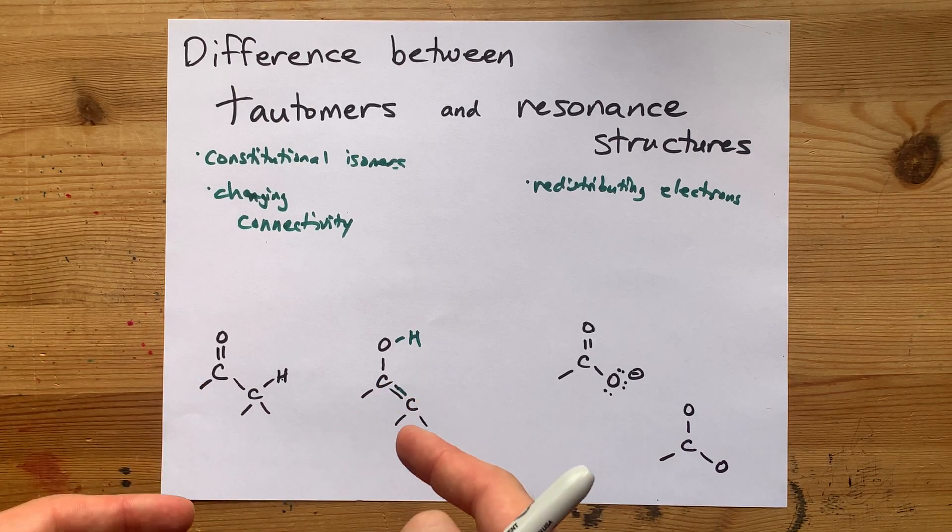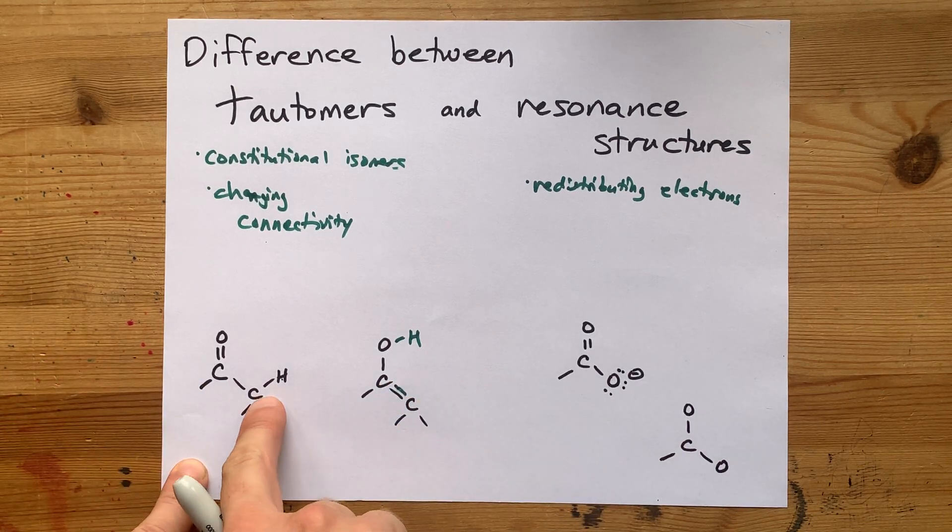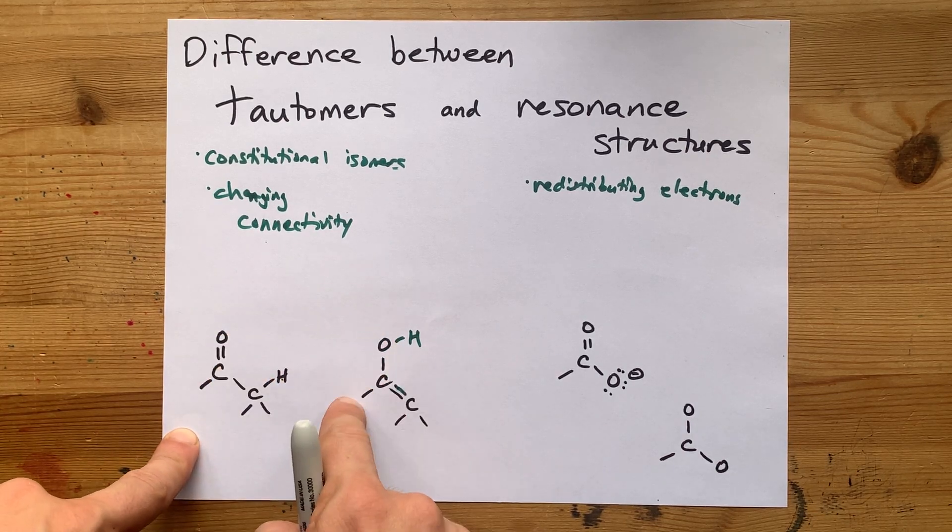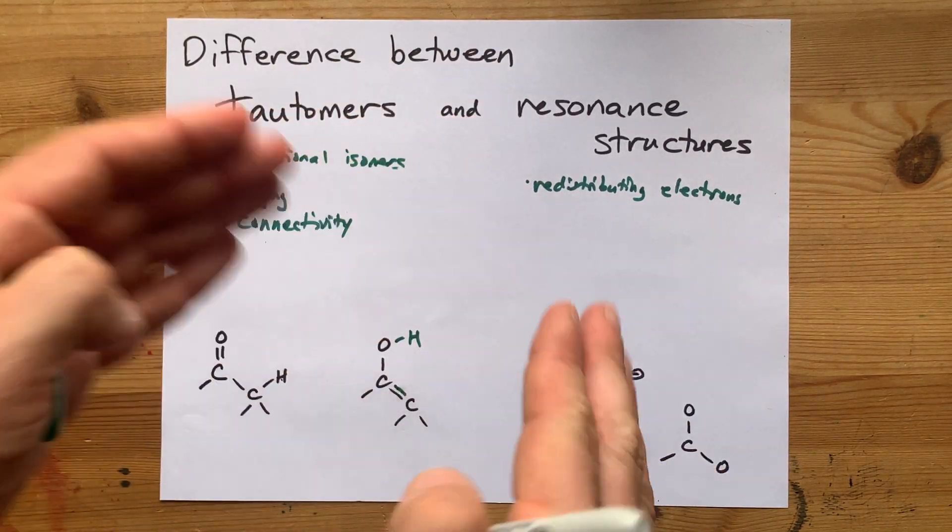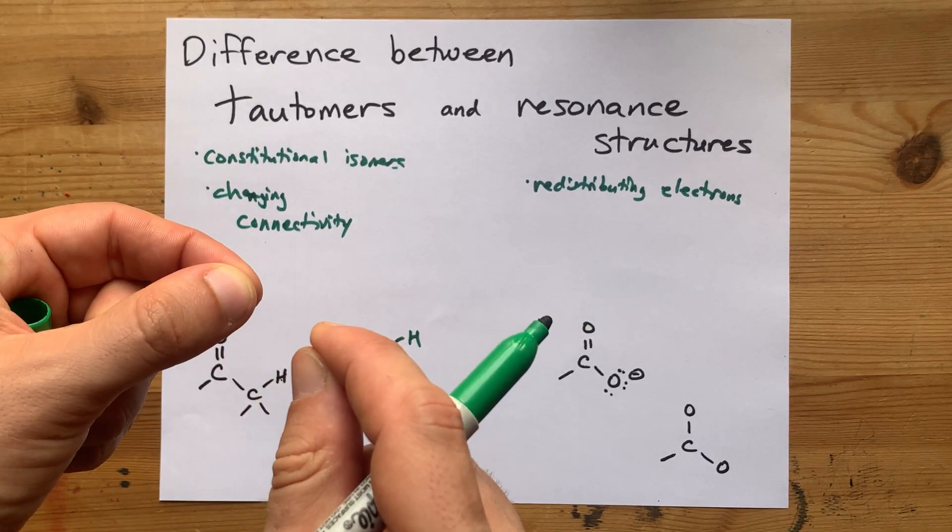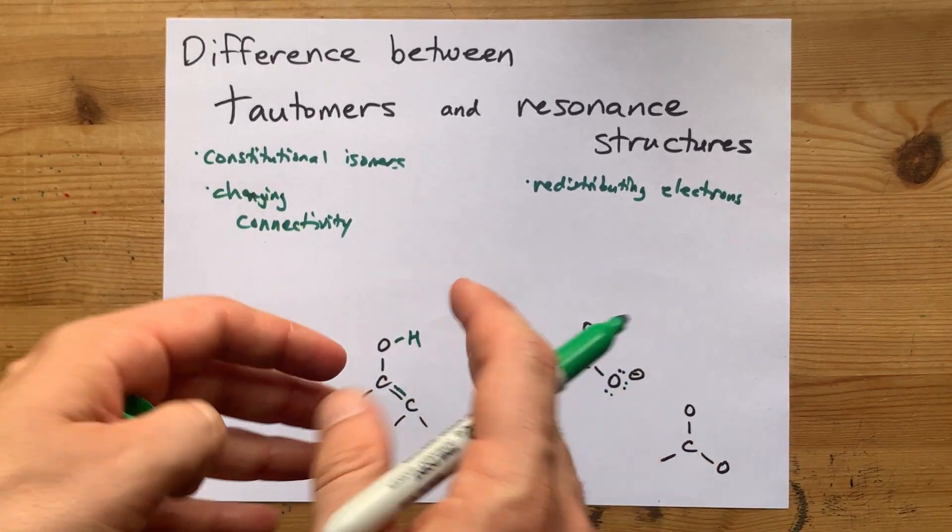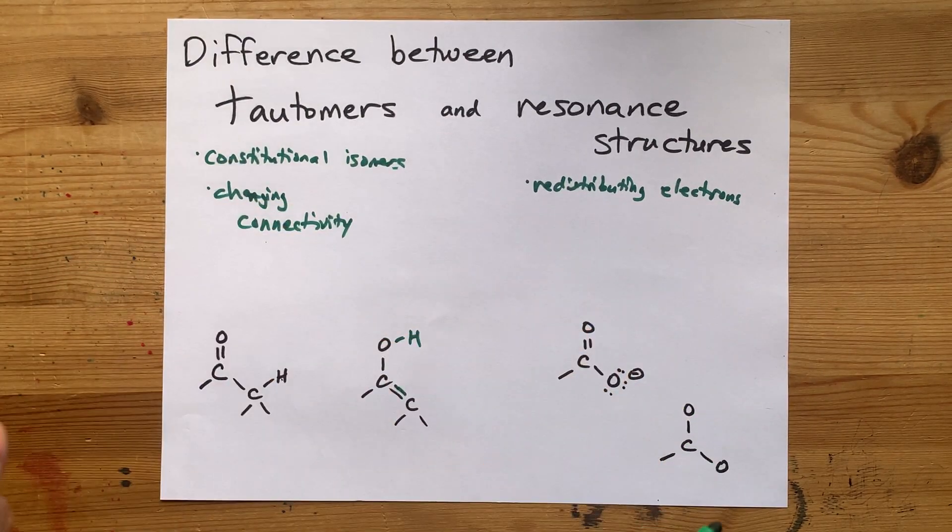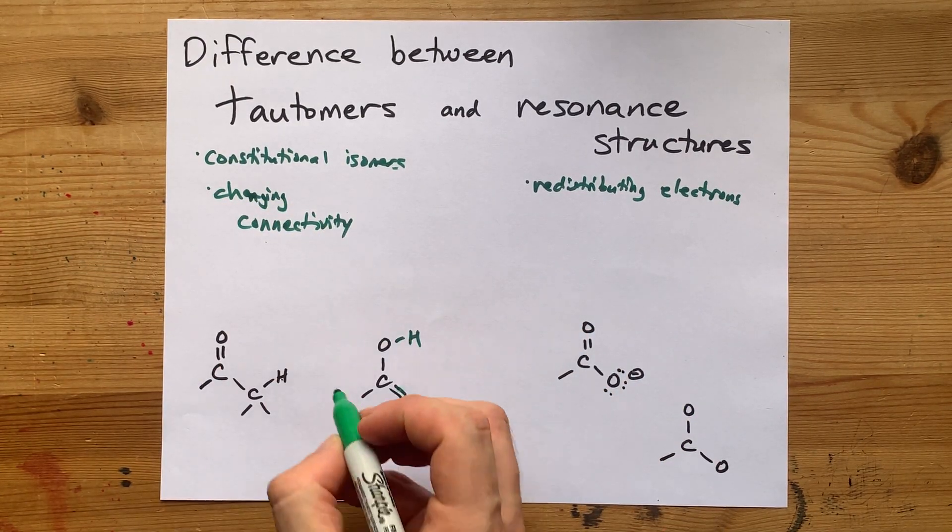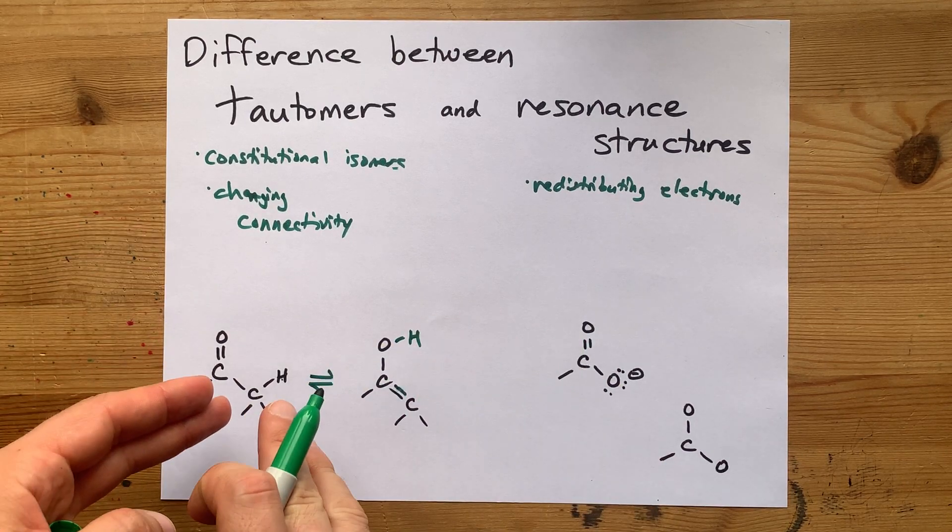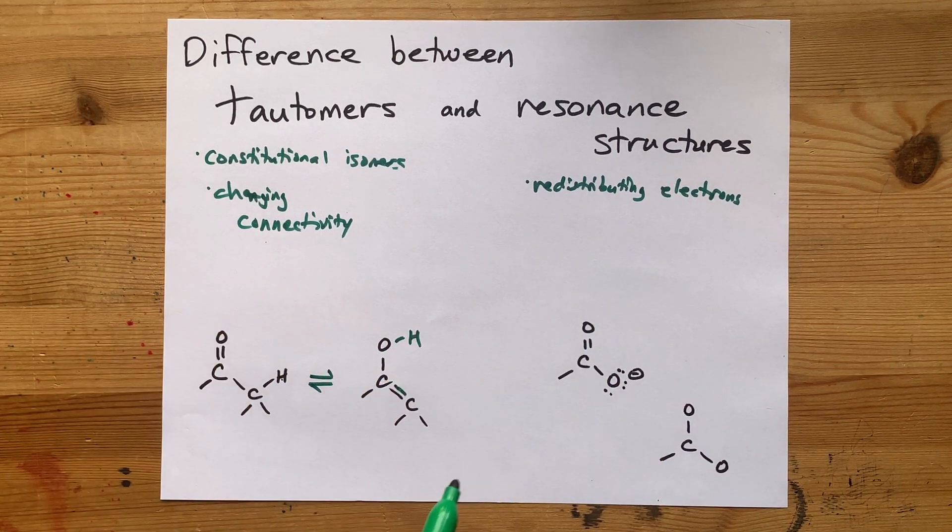It's a rapid equilibrium. But because you're breaking this bond fully and reattaching the H on another atom, it's not resonance. Resonance is when all the atoms stay exactly where they are. You're just representing it in a different way by redistributing the electrons. Tautomers are rapid equilibrium, and some bonds break, and new bonds form.